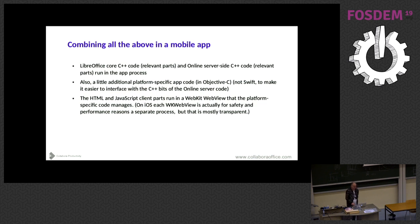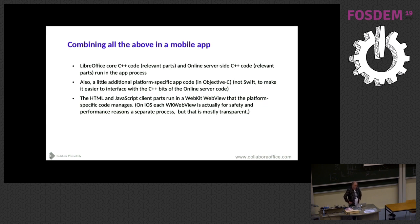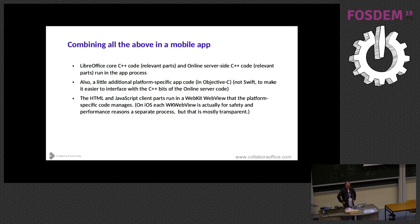If you want to combine this into a mobile app that runs standalone on the mobile device, you need all the relevant parts of the C++ code from the server, some platform-specific code that uses the mobile platform's own APIs, and JavaScript bits. The platform-specific code is actually not that much — maybe a thousand lines or even less. We don't need all of the server C++ code in the app; only parts here and there, with a bit of ifdef spaghetti to filter out only the bits actually needed.